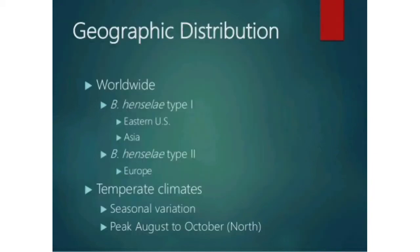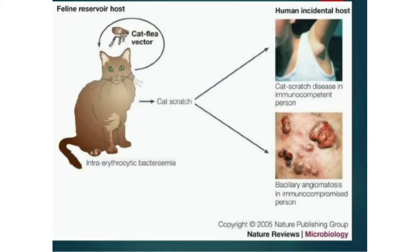Regarding geographic distribution of cat scratch disease: it is found worldwide generally, but Bartonella henselae type 1 can be found in eastern US and Asia, and type 2 is found in Europe. Generally it can be found in temperate climates with seasonal variation, and peak incidence is in August to October. You can see here the feline reservoir host, which is the cat.